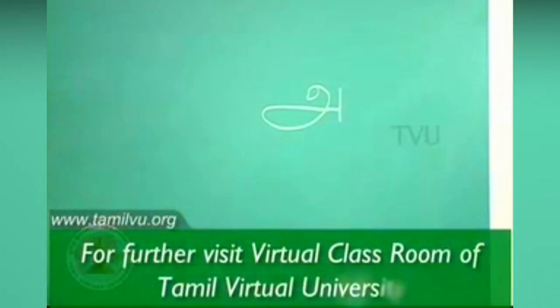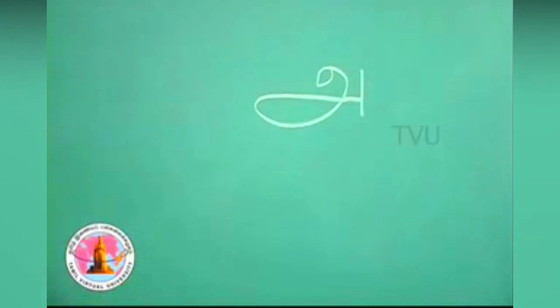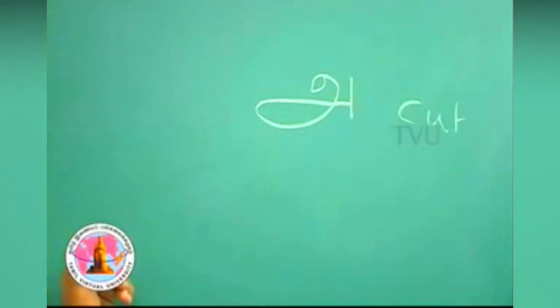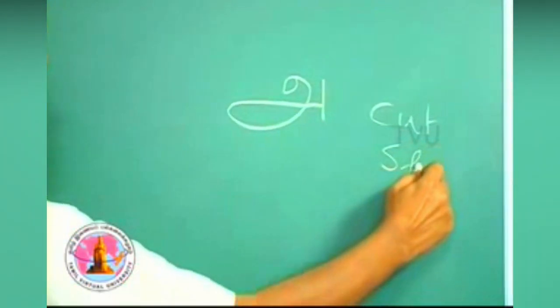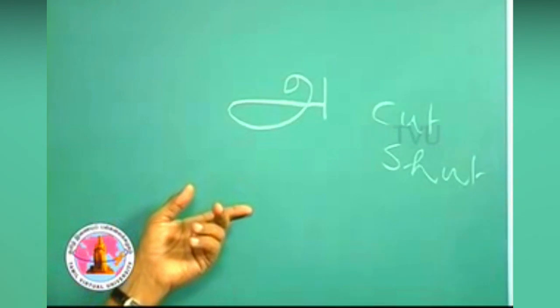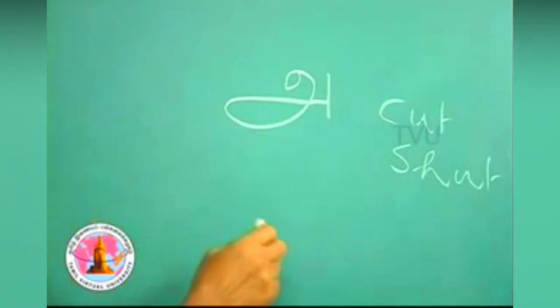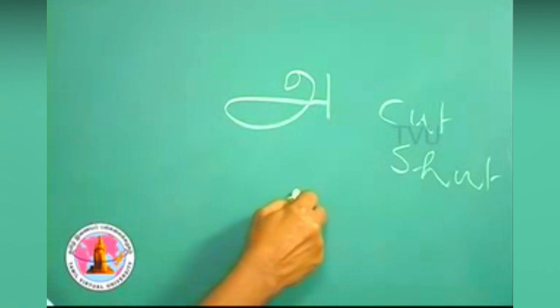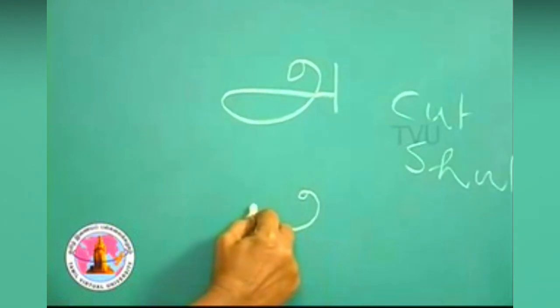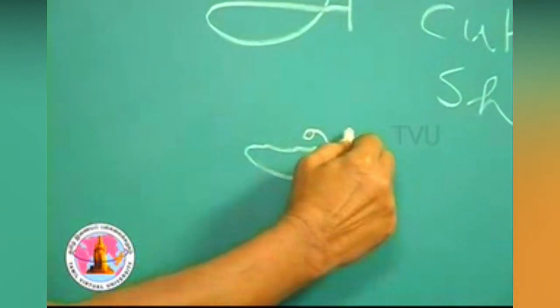I start with the letter 'A'. This means the short 'a' sound, as you have the vowel sound in 'cut' or 'shut'. This is 'அ' and it is written like this: you start with a circle, go down, take a bend, and stretch it.